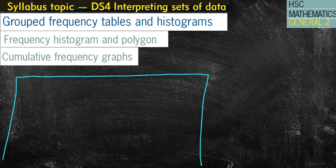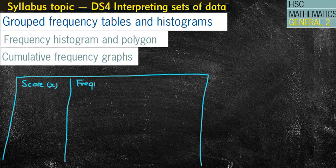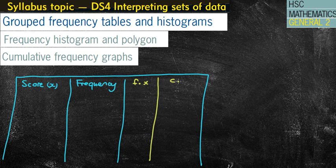So I'm going to look at our frequency table to start off with. Often we have the score first of all — x — and we have our frequency column, hence why they're called frequency tables. Sometimes you might have an fx column, and sometimes you might have a cf column. You might also have a tally column before the frequency, but often we don't.